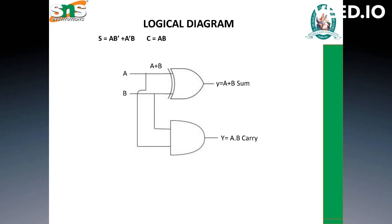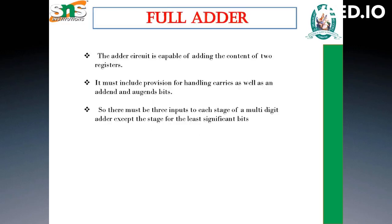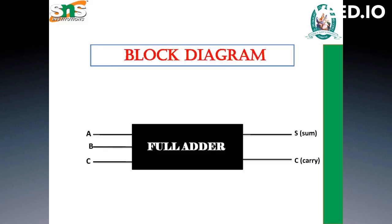Now let us see what a full adder is. A full adder is capable of adding the contents of two registers and must include provision for handling a carry input from a previous stage. When there are more than two input bits — specifically three bits — we use a full adder. The inputs are A, B, and C, as shown in the block diagram for a full adder.